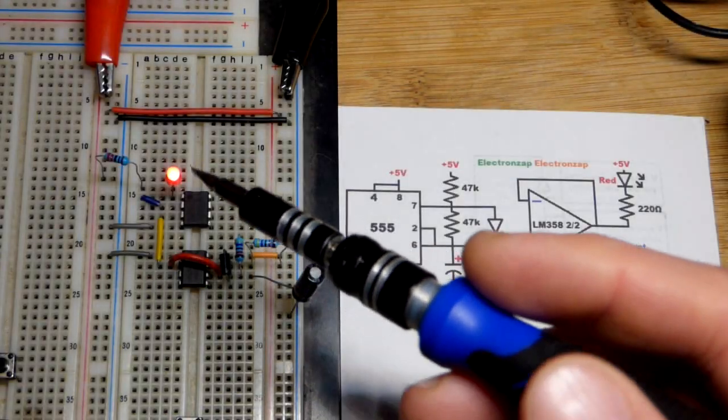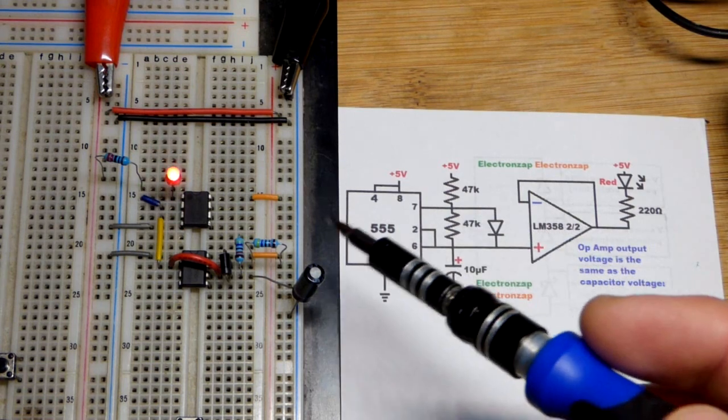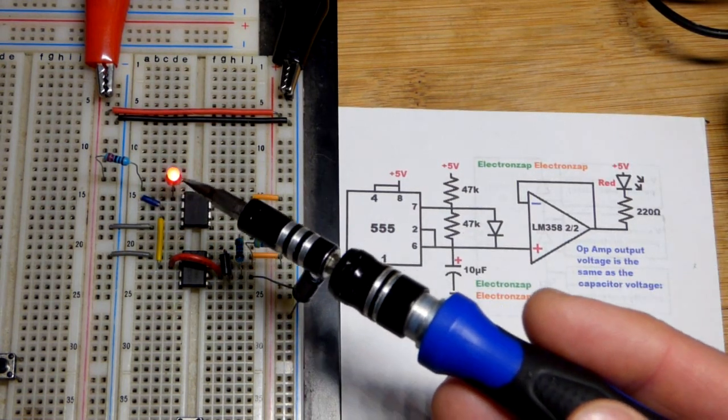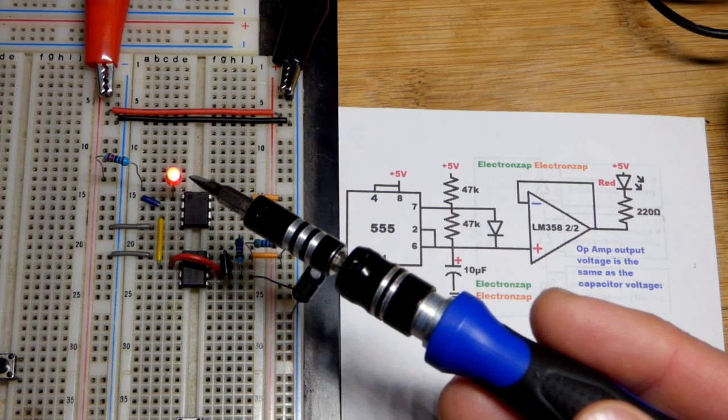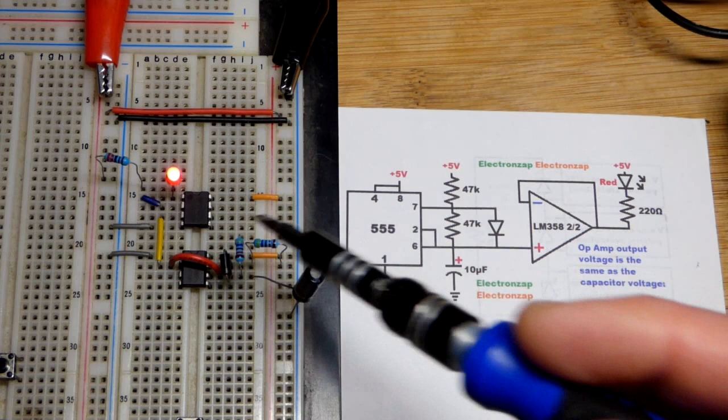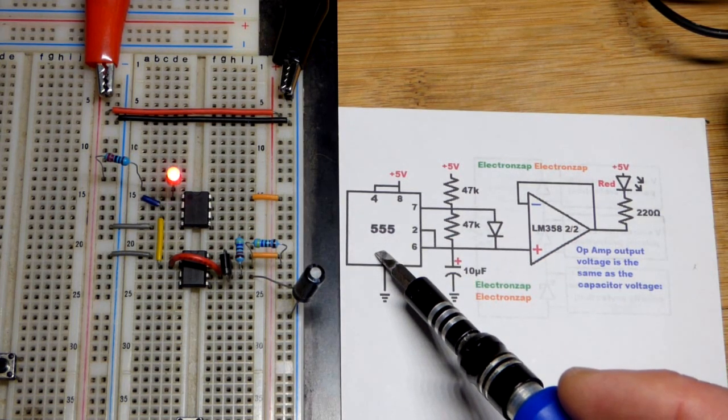In this video we have a circuit I made a long time ago. I don't have this in digital form anymore, I just found this printout. We have a red LED here that is pulsating. The main component for this is basically the 555 timer. I have it wired in astable mode.